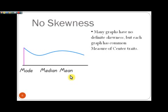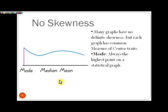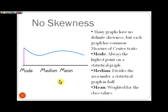No skewness occurs quite frequently when there is no pattern to the frequencies from one class to another. To review: the mode is always the highest point on the statistical graph; the median divides the area under a histogram, frequency polygon, or box plot into equal areas; and the mean is a weighted average, weighted for the class values.